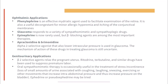For ophthalmic applications, phenylephrine is an effective mydriatic agent used to facilitate examination of the retina. Glaucoma responds to a variety of sympathomimetic and sympatholytic drugs; epinephrine is now rarely used, but beta-blocking agents are among the most important therapies. For genitourinary applications, beta-2-selective agents relax the pregnant uterus. Alpha-sympathomimetic therapy is occasionally useful in the treatment of stress incontinence; ephedrine or pseudoephedrine may be tried.